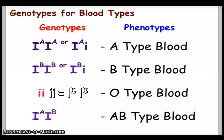The genotype for blood group A can be IAIA or IAIO. For blood group B it can be IBIB or IBIO. For blood group O it is only IOIO. For blood group AB it is IAIB, having both A and B alleles.